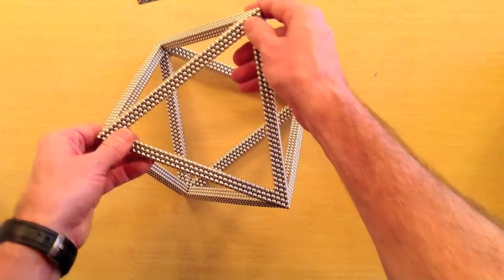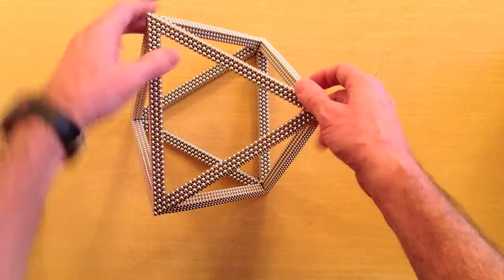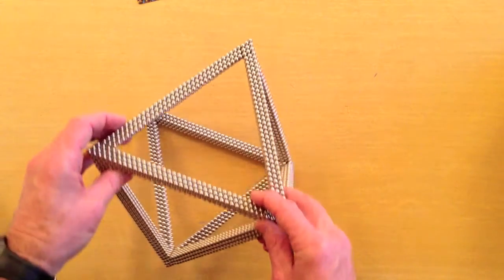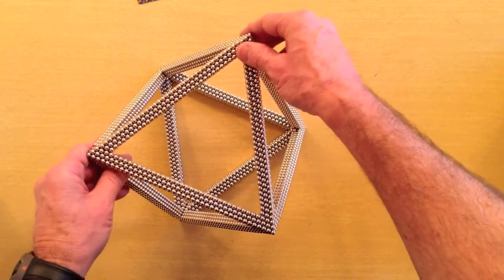The method can be used to build larger or smaller octahedra, including this 3786 magnet octahedron with edge length 40.